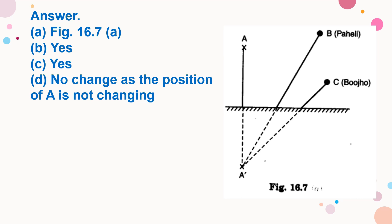Now Peheli moves from B to C. Where does the image of A move? No change, as the position of A is not changing — only B and C are changing. The image of A is not moving from one place to another. If A changes, then the image changes. So there is no change as the position of A is not changing. Though Peheli moves from B to C, only the image of B or C changes; the image of A does not move.